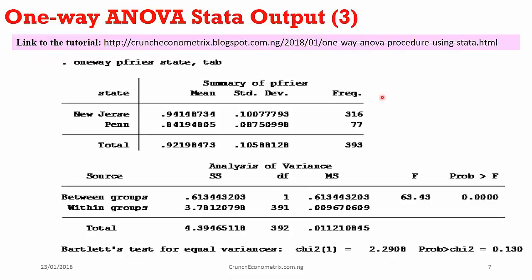In Stata you can also generate summary statistics alongside the ANOVA output by typing the syntax: oneway y-variable x-variable, tab. That syntax will generate summary statistics showing the mean of each group in your data set and their respective standard deviations. In this case the mean price for New Jersey is 0.94 while the mean price for Pennsylvania is 0.84, with their respective standard deviations and frequencies also shown. Below that you can also see the ANOVA table, so with one command you can get both tables.